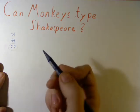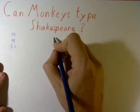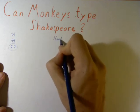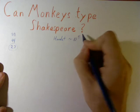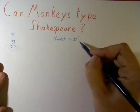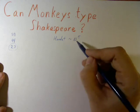Okay, the probability. Shakespeare, Hamlet. Let's take Hamlet. Hamlet has about 10 to the 5th characters in it. I mean, letters, spaces, so on.